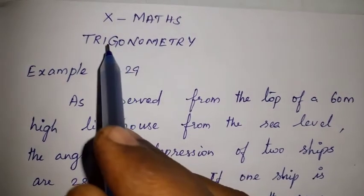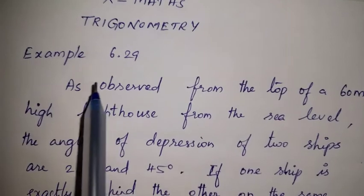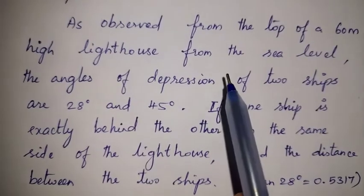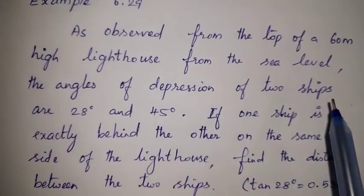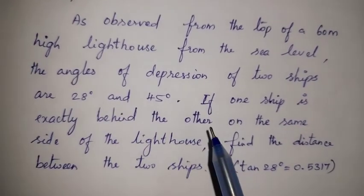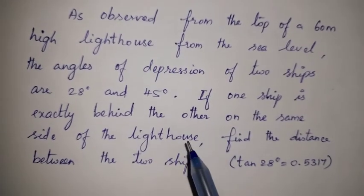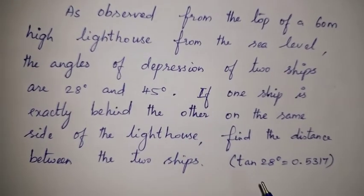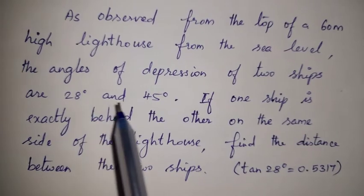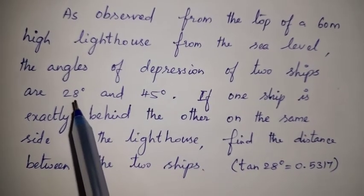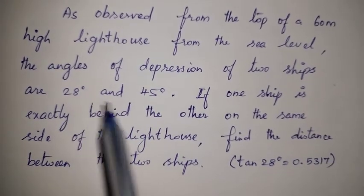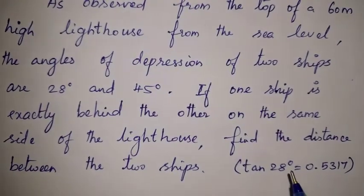Welcome to Tom Math 10 Standard Maths lesson, trigonometry example number 6.29. As observed from the top of a 60-meter high lighthouse from the sea level, the angles of depression of two ships are 28 degrees and 45 degrees. If one ship is exactly behind the other on the same side of the lighthouse, find the distance between the two ships. Tan 28 degree is equal to 0.5317 — this is the hint value given in the question.